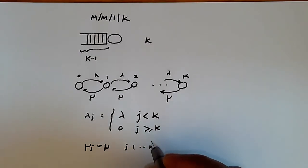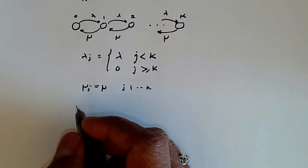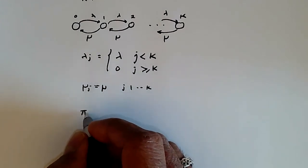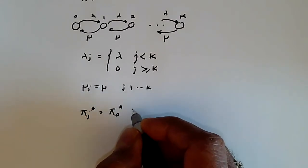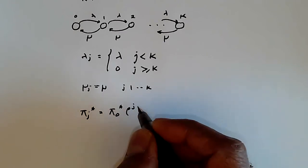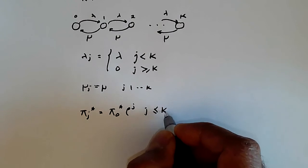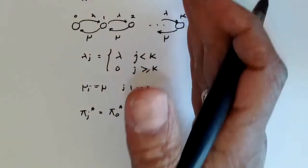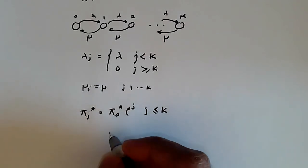So we know the general equation for the M/M/1 queue. We already saw that. So there we saw that pi j star is given by pi 0 star rho to the j. And that's going to continue to be the case for j less than or equal to k, because essentially while the queue is less than k, while the queue is smaller than k, we really don't know that the queue is not unbounded.